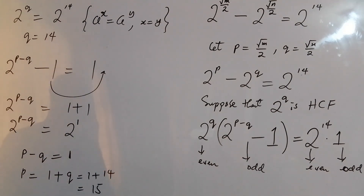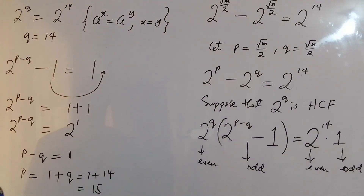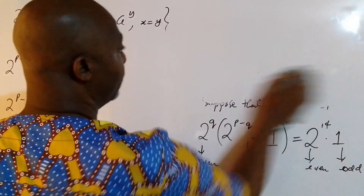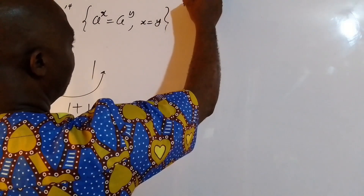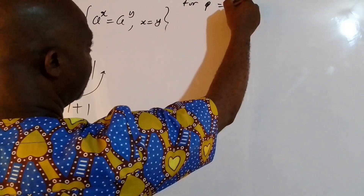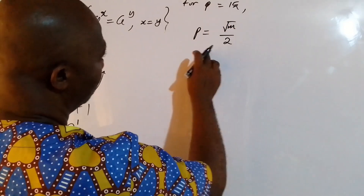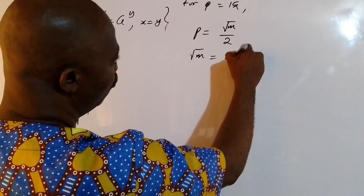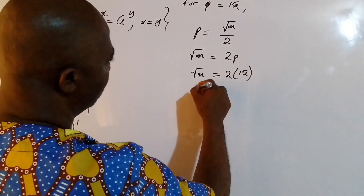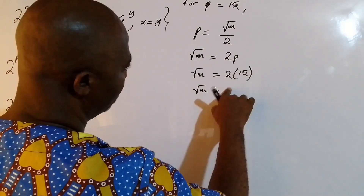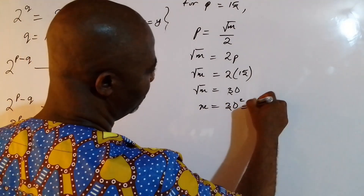Now we go back to find m and n. Since p equals root m over 2, we have root m equals 2p, so root m equals 2 times 15, which is 30. Squaring both sides, m equals 30 squared, which is 900.